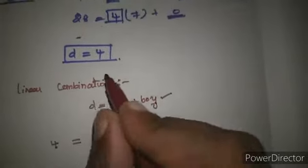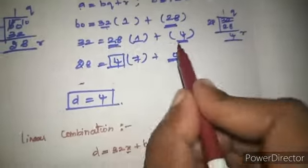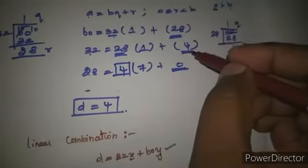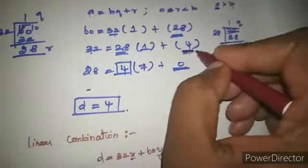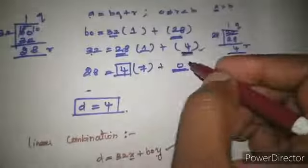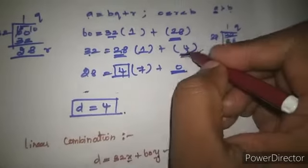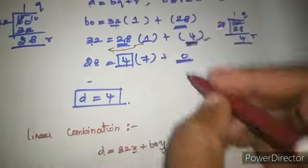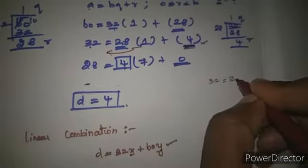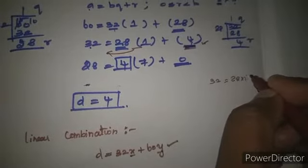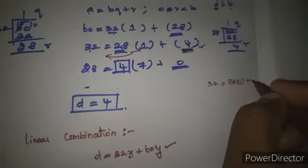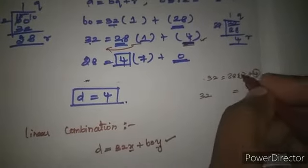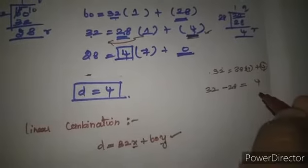Write the same step. Remainder is 4. How do you write it? Keep 4 on the left side. Now work backwards. 32 equals 28 times 1 plus 4. So 4 equals 32 minus 28 times 1.